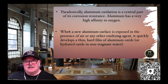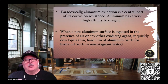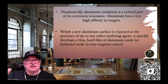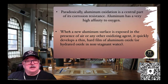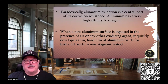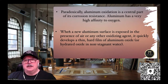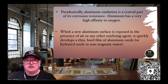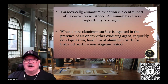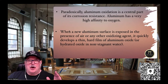Paradoxically, aluminum oxidation is a central part of its corrosion resistance. Aluminum has a very high affinity for oxygen — the air around us. When a new aluminum surface is exposed to air or any oxidizing agent, it quickly develops a thin, hard film called aluminum oxide, or hydrated oxide in non-stagnant water. This is a protective coating. Even on untreated aluminum, just passing it through the air immediately develops this thin hard layer of aluminum oxide, which helps prevent it from being affected by chemicals — before you coat it or do anything to it.